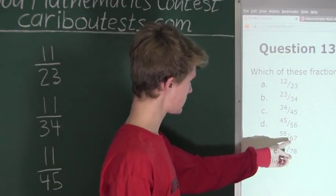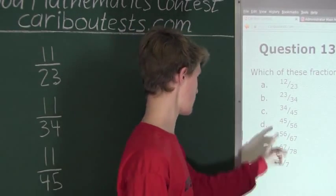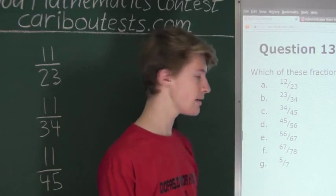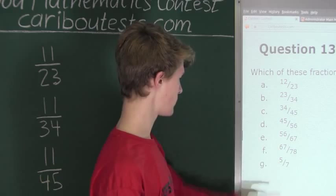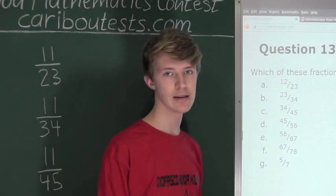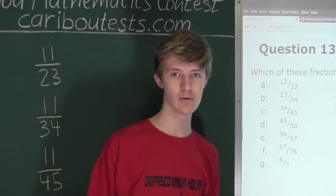Now for the next one, 67 minus 56 is 11, so 11 over 67. Again, the numerator is 11. And finally for F, 78 minus 67 is 11, so 11 over 78 would be the difference.